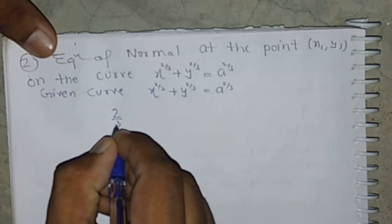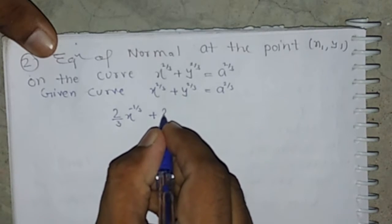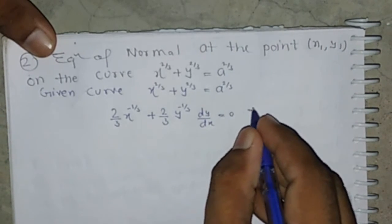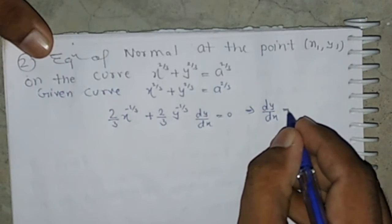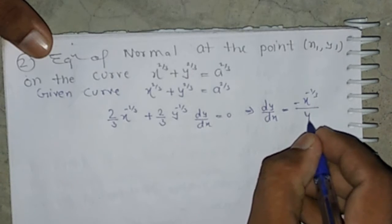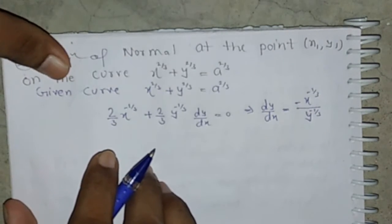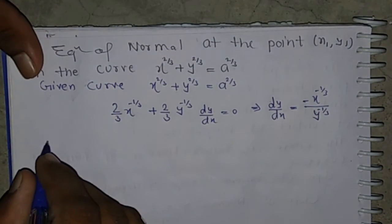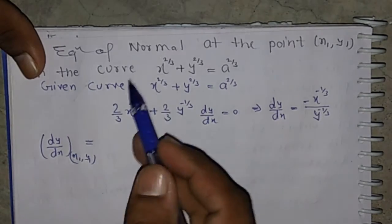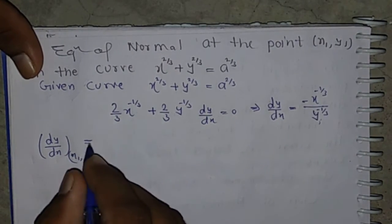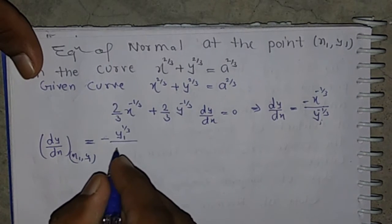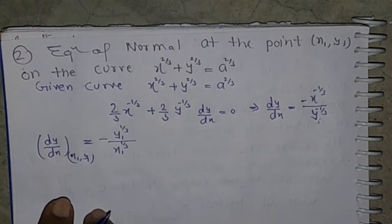Differentiating, we get (2/3)x^(-1/3) + (2/3)y^(-1/3) dy/dx = 0, so dy/dx = -x^(-1/3) / y^(-1/3). Evaluating at point (x1, y1): dy/dx = -y1^(1/3) / x1^(1/3), where the exponent of x1 is positive.